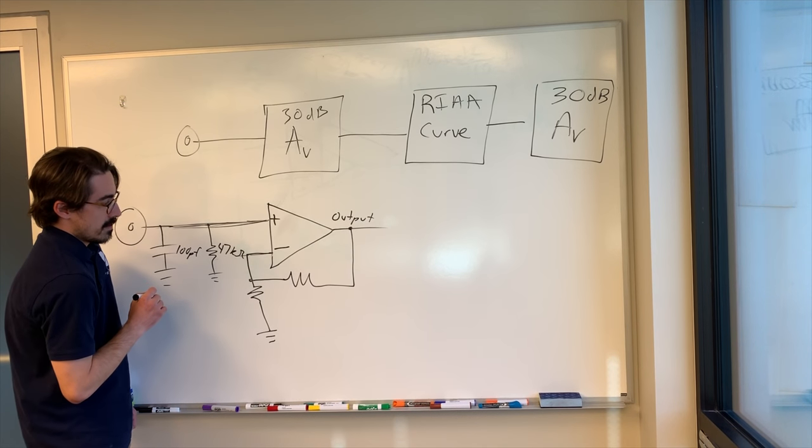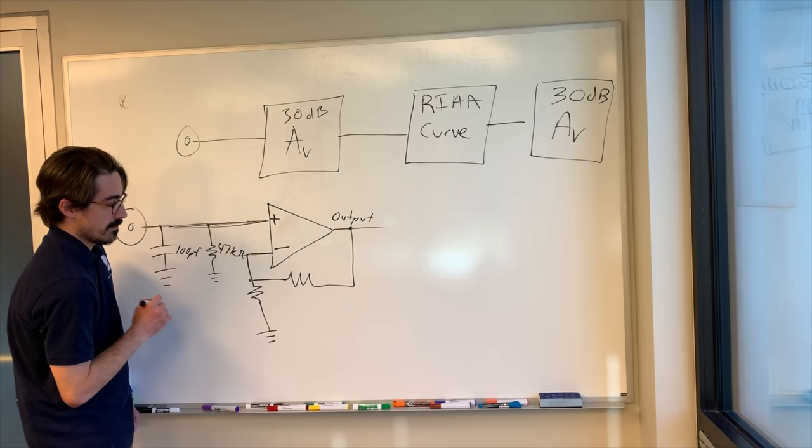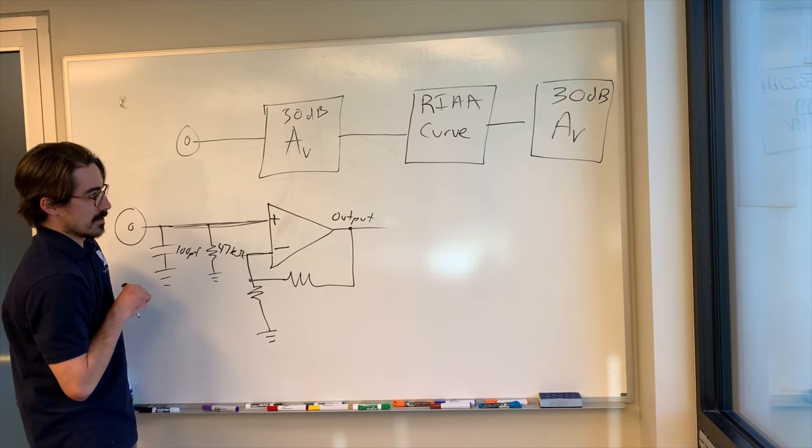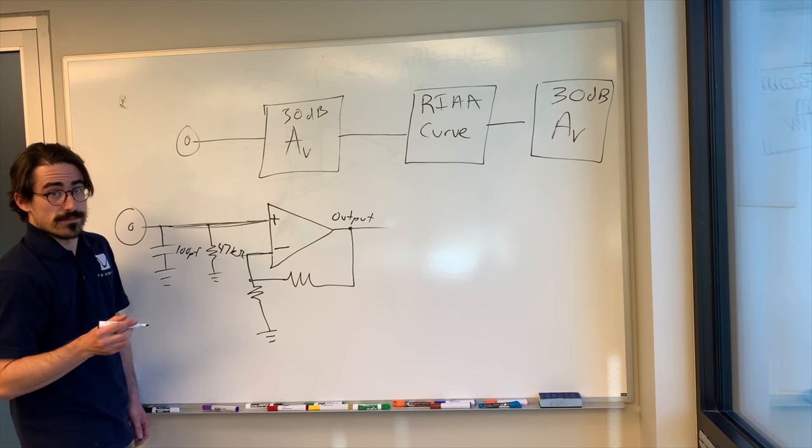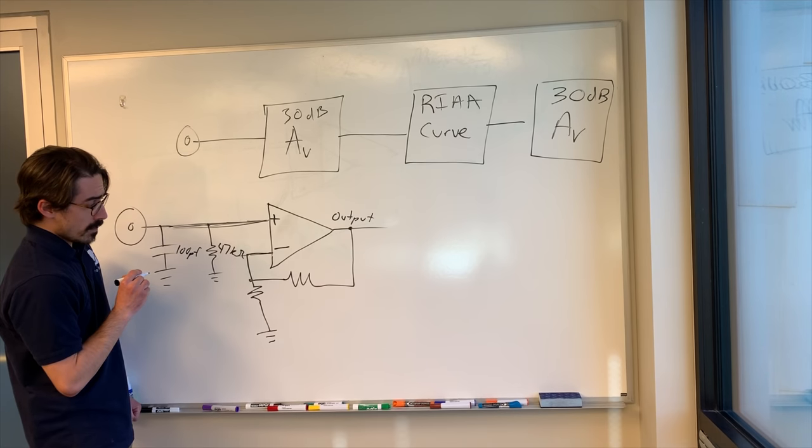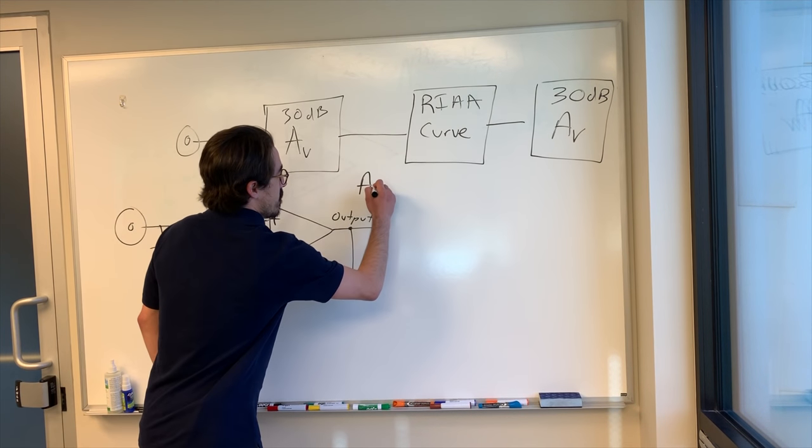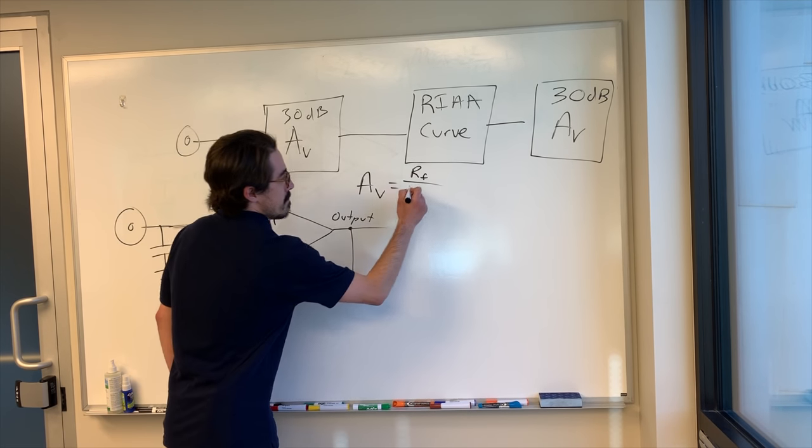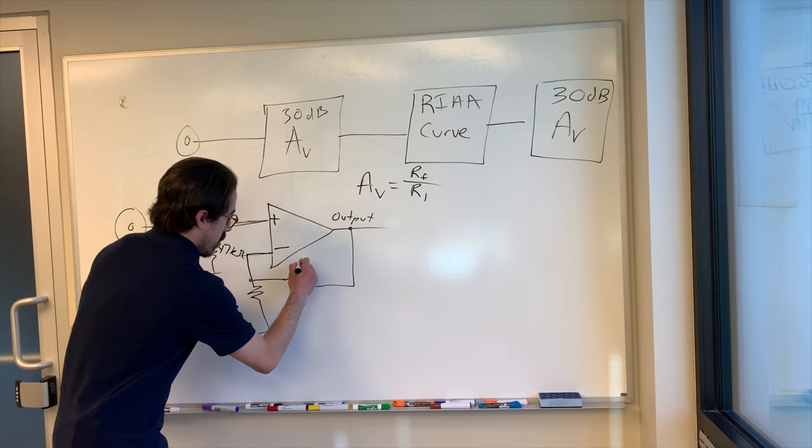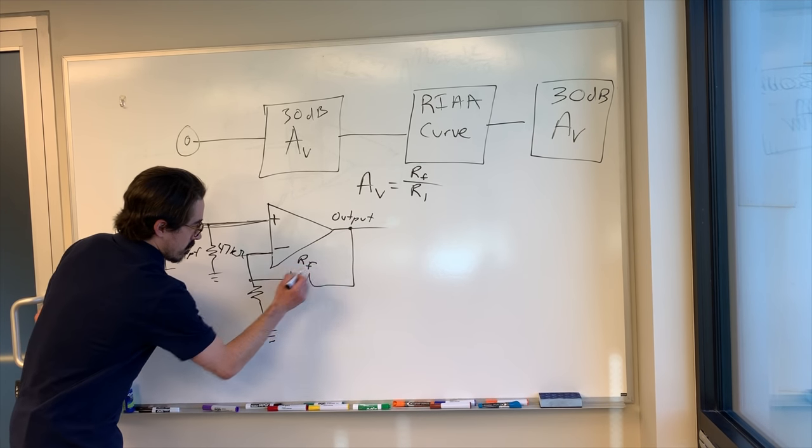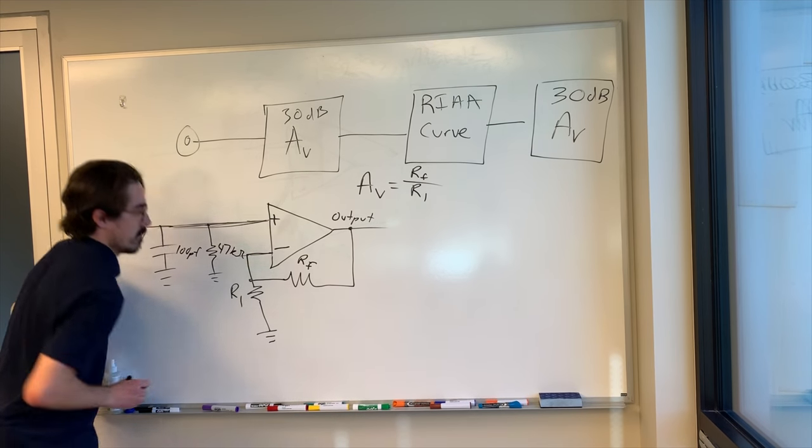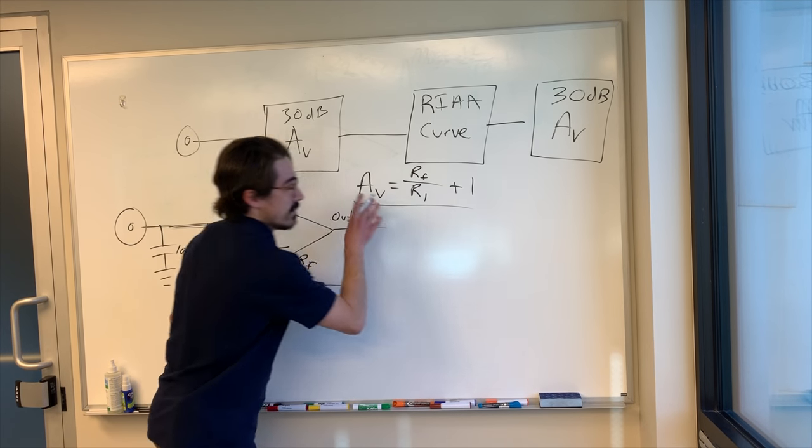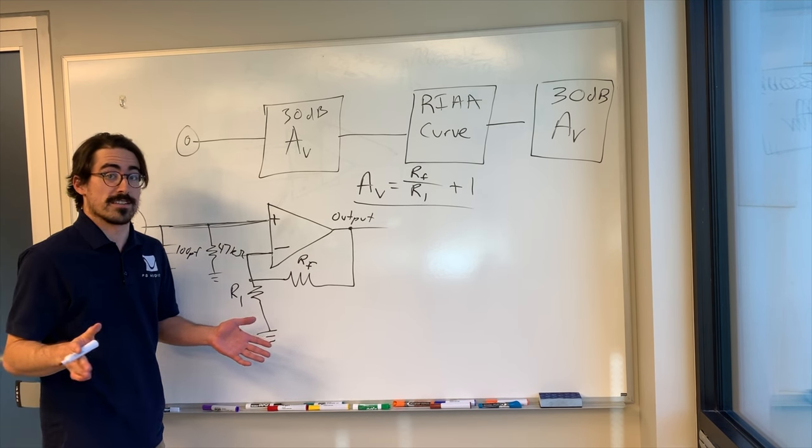And so I'm going to set this for certain resistor values to set our 30 dB, because we want 30 dB here. And so the equation for a non-inverting amplifier is going to be Av equals Rf divided by R1, and this is going to be Rf, and this is going to be R1, plus 1. That is the equation for a non-inverting amplifier.